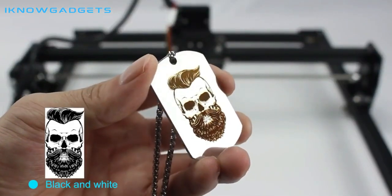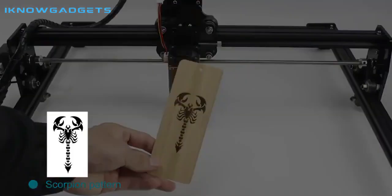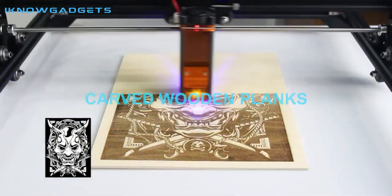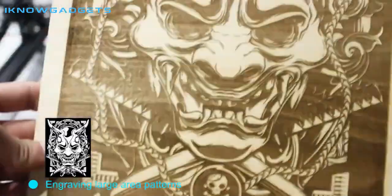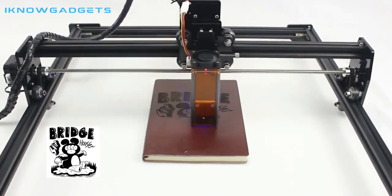The laser module is capable of producing 0.05mm² light spot, allowing it to cleanly cut 9mm pine boards and engrave on a variety of materials. The machine also supports USB and BT wireless data transmission methods, making it easy to use.